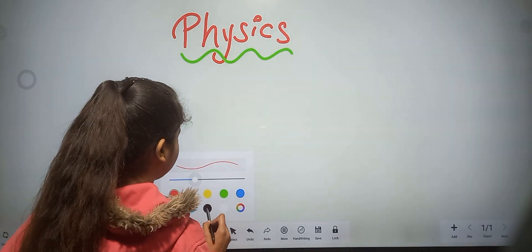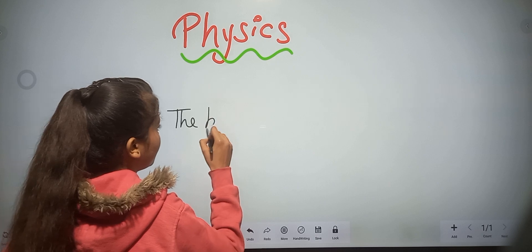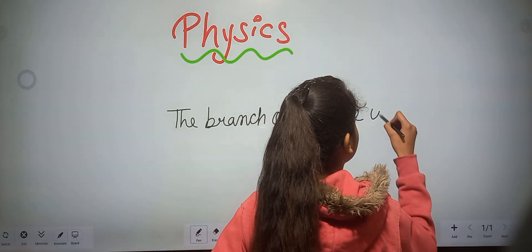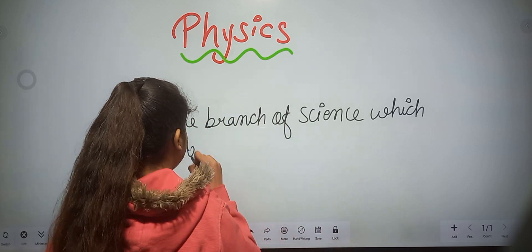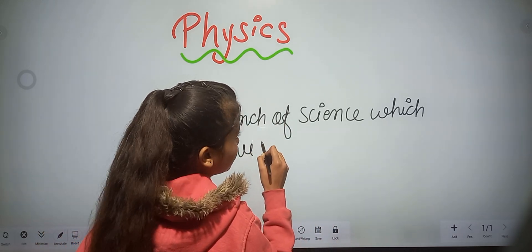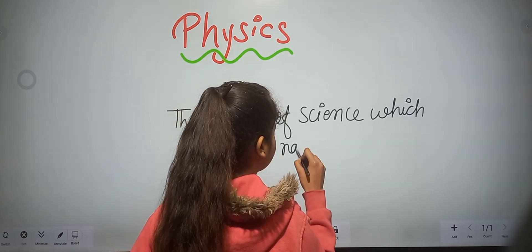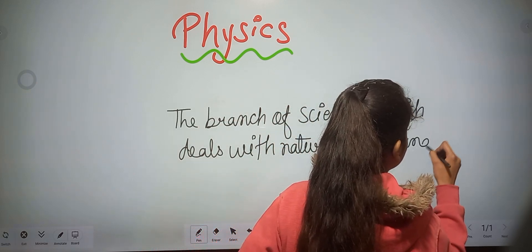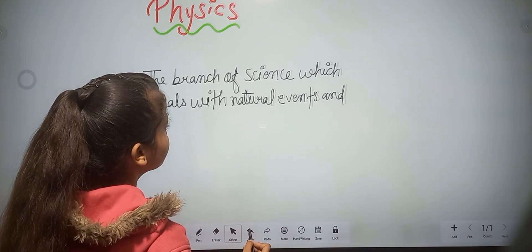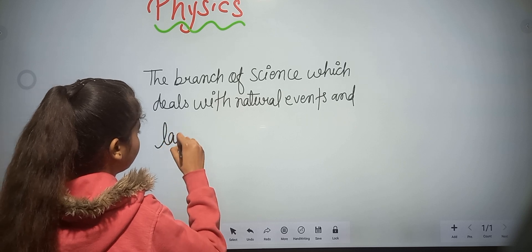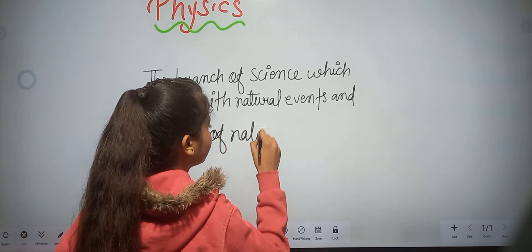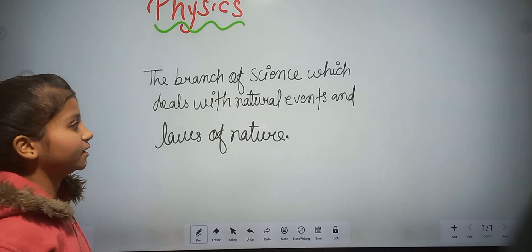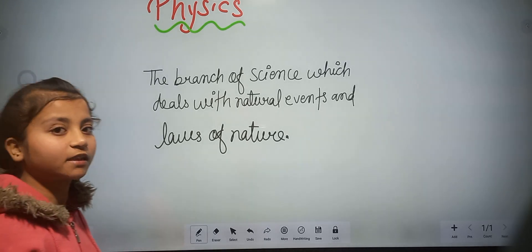One of the definitions is: the branch of science which deals with natural events and laws of nature. Natural events in the sense are events that are created by nature. For example...